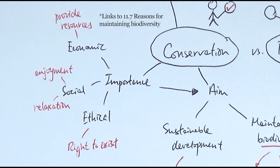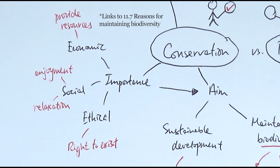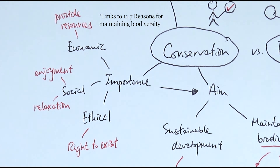The other thing is social — in terms of enjoyment, relaxation, and aesthetic reasons. People enjoy walking in the countryside, exploring forests and those places, and that is one of the benefits of conservation. The last one is the ethical consideration: all organisms, whether animals or plants, have the right to exist. People say that humans have a responsibility to maintain biodiversity for all organisms and make sure they can all survive.